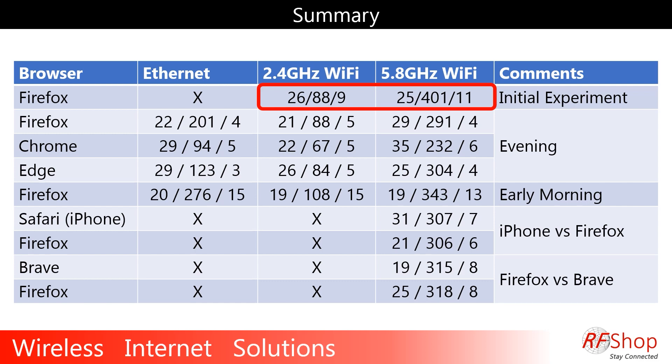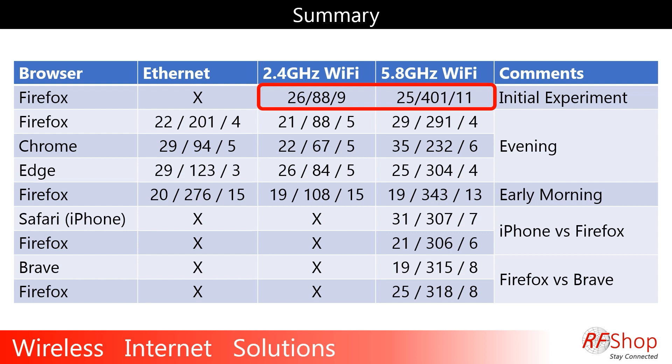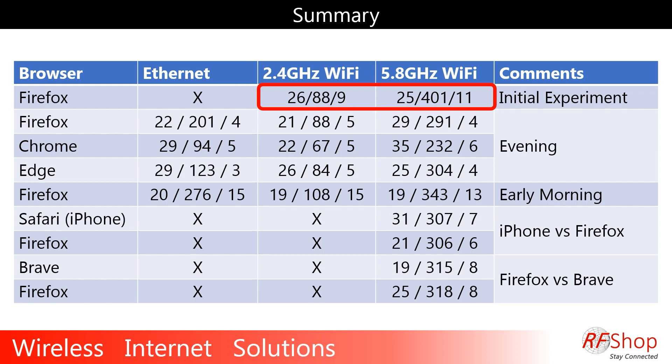I did a lot of tests and have a summary table on screen showing ping/latency, download, and upload speeds across all conditions. In the initial experiment I was quite lucky — on 2.4 GHz I got 26 milliseconds ping, 88 megabits download, and 9 up. That's good enough and roughly what you'd expect from Australia's NBN fiber network.